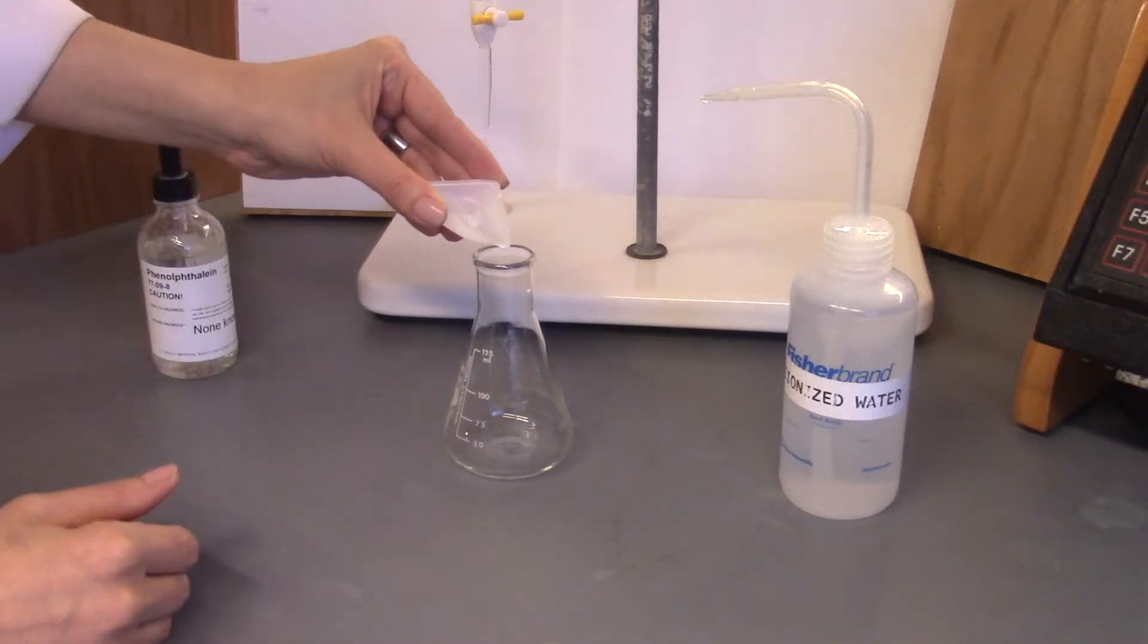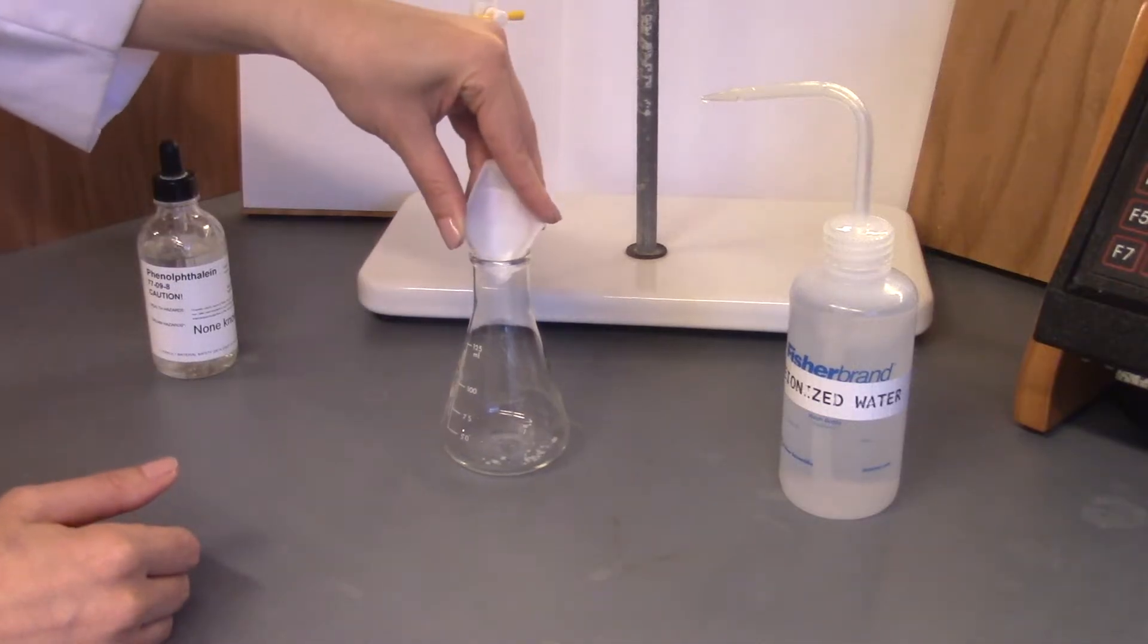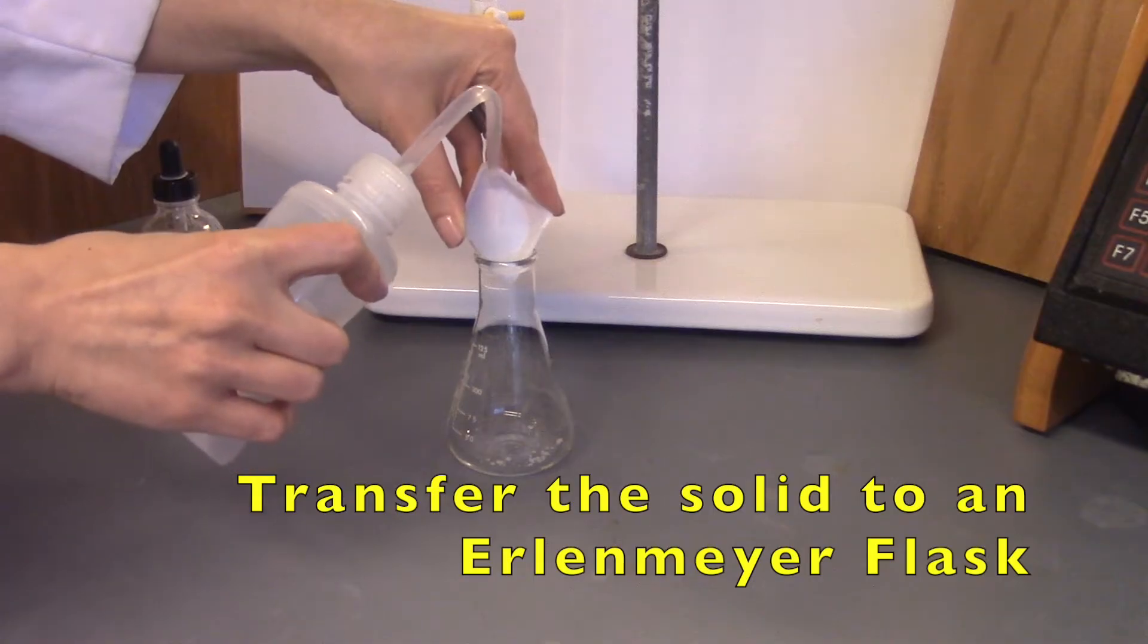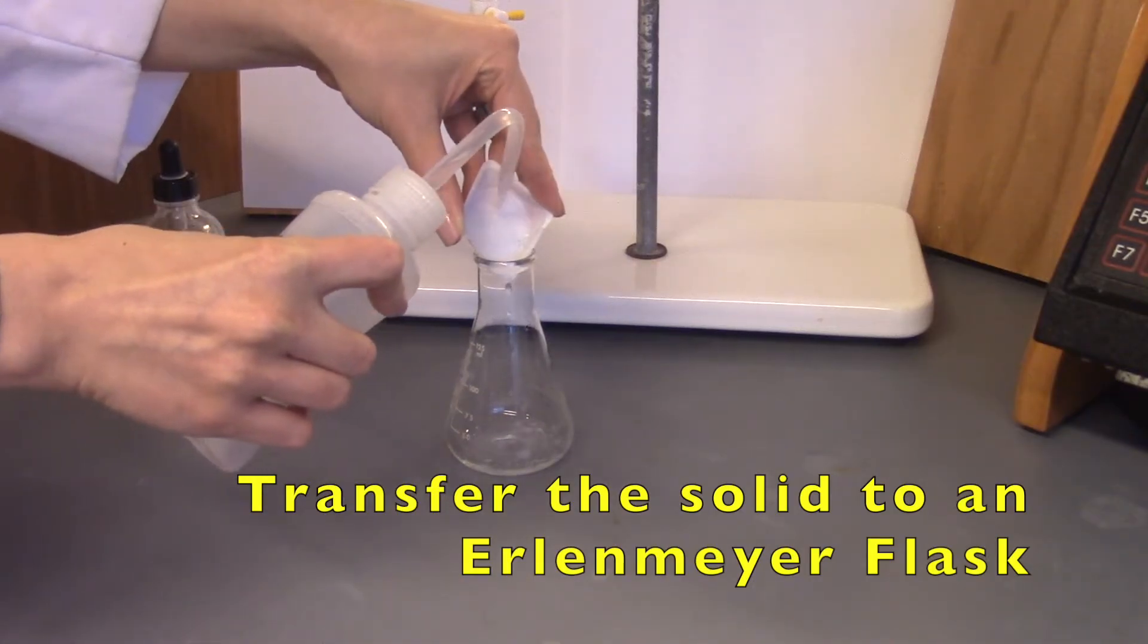Transfer the solid from the weighing boat to the Erlenmeyer flask. Rinse the weigh boat thoroughly with deionized water to ensure quantitative or complete transfer of the weighed solid to the flask.